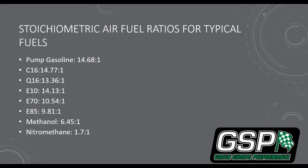Ethanol has a much lower stoic value than gasoline. I've put E10, E70, and E85 on the list so you can see the values walking down. We can predict that 100% ethanol is going to be somewhere around 9.0 to achieve stoic. When setting up your targets it's really important to know exactly what fuel you're using. Also notice the big difference in stoichiometric AFR between C16 and Q16 — Q16 is the hot ticket for boosted motors these days.